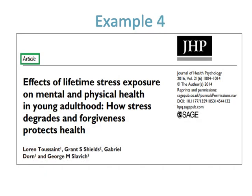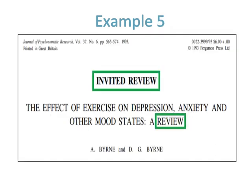In Example 4, the article is written which is bordered with green color. After reading the overall article, the authors used questionnaires to investigate the effect of lifetime stress exposure on mental and physical health in young adulthood, so it is a research article. In Example 5, the invited review and the word review in the title are bordered with green color, so in this case it is a review article.